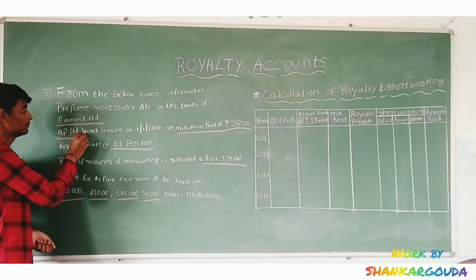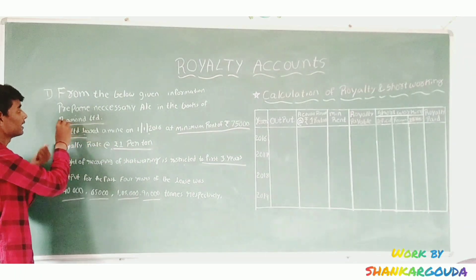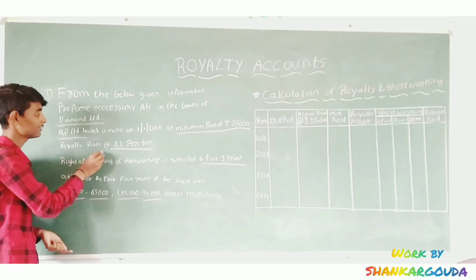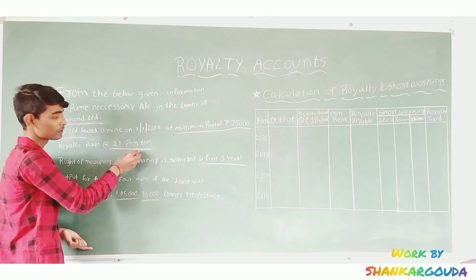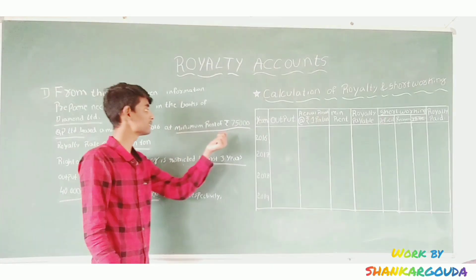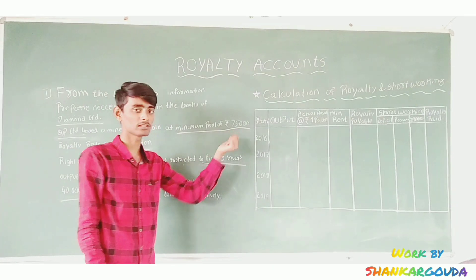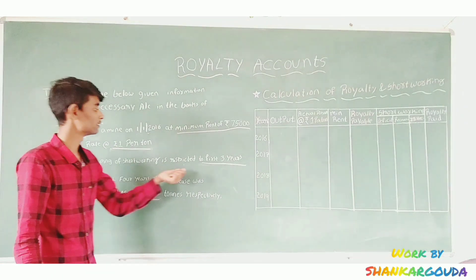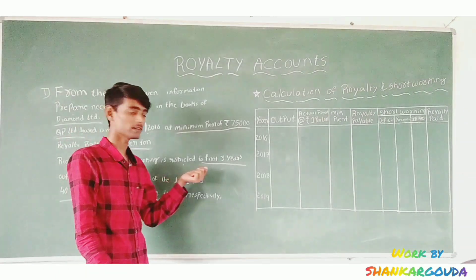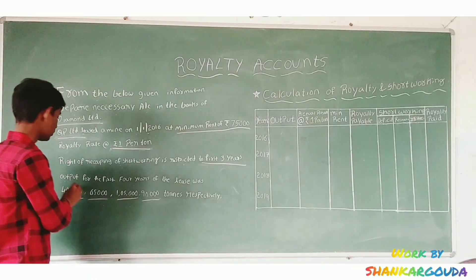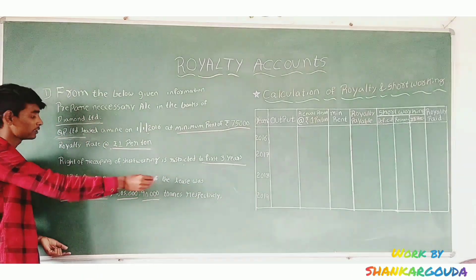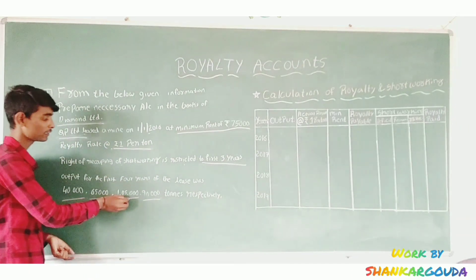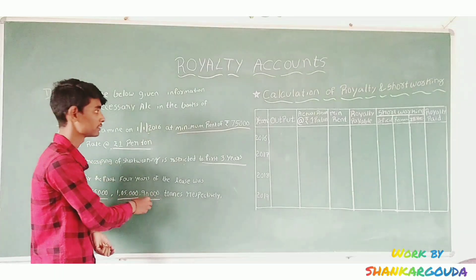Here, the lessee is the lesser party and the lessor is the other. Royalty rate is 1 rupee per unit and the minimum rent is 75,000. Recoupment of short working is restricted to the first 3 years. Outputs for the first 4 years are 40,000, 65,000, 1,05,000 and 90,000.